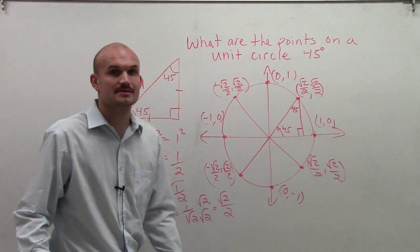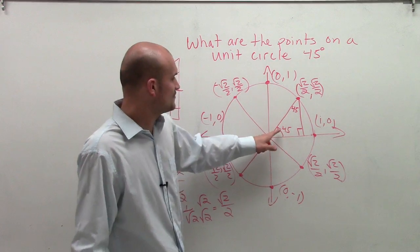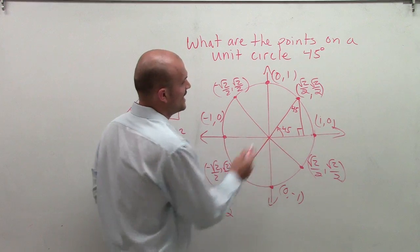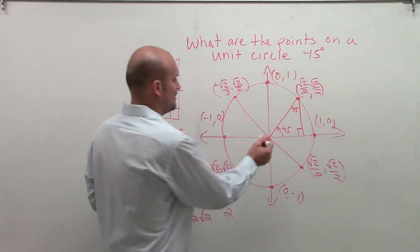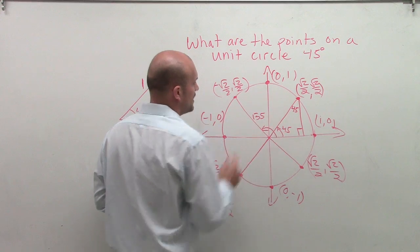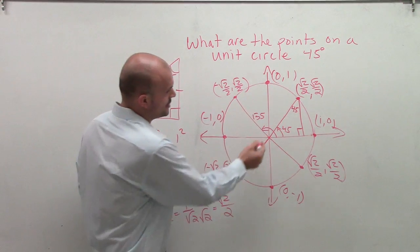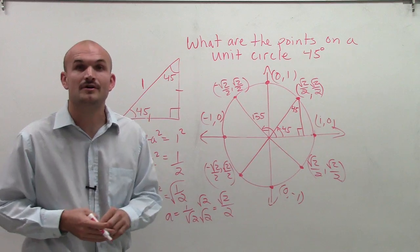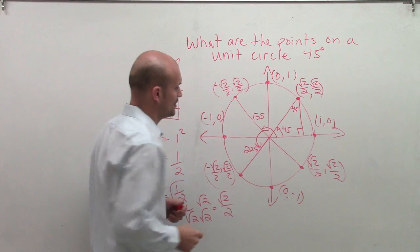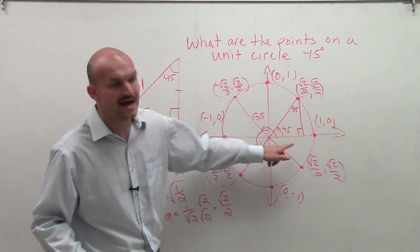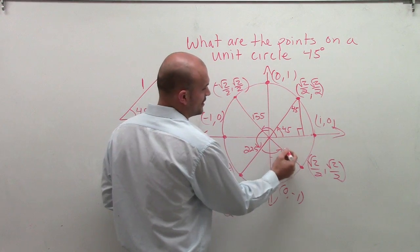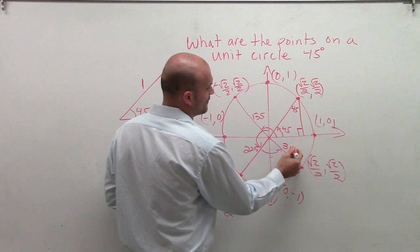Now, the last thing we need to determine is: what exactly are these angle measures? If this is 45 degrees, adding 90 gives 135 degrees. Add another 90 and we get 225 degrees. Add another 90 and this angle is 315 degrees.